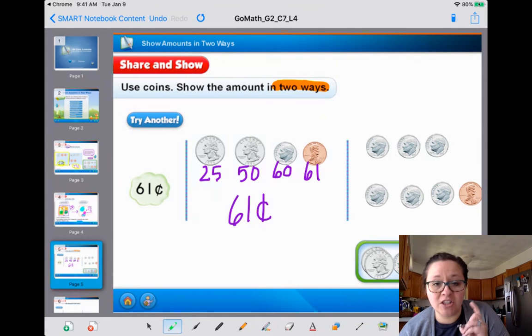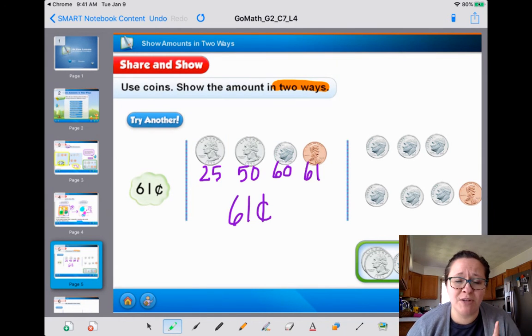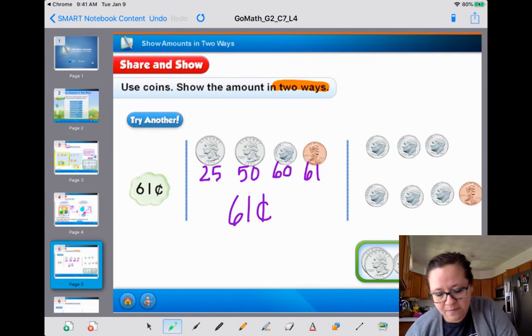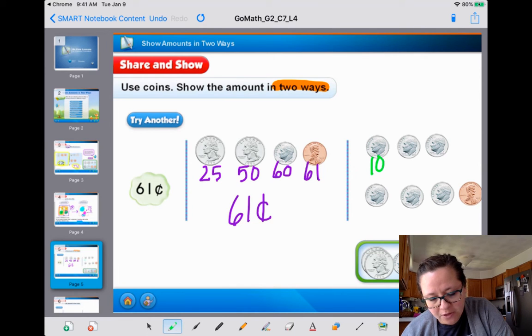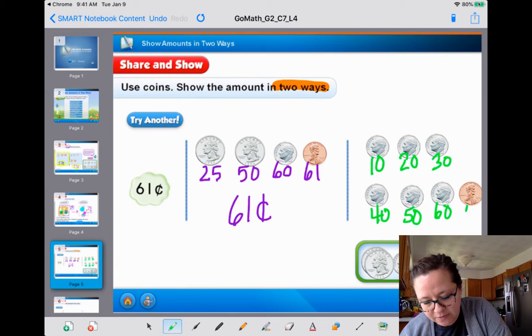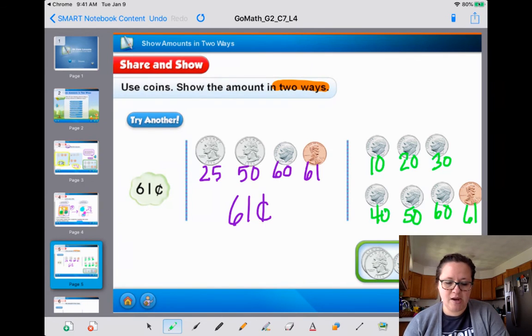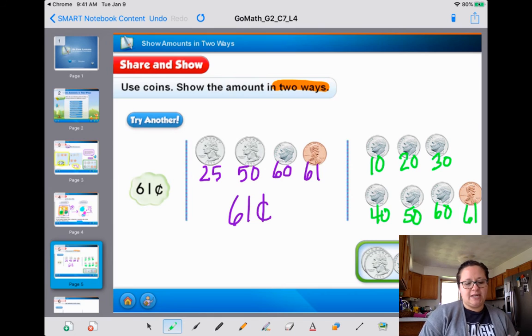So look at that. We're going to count and double check our work. Good mathematicians always double check. So we got 10, 20, 30, 40, 50, 60, 61. We made 61 cents here. So there we go. Two ways we did it, right?